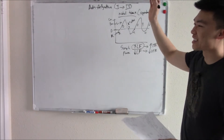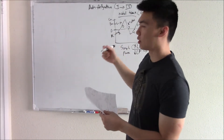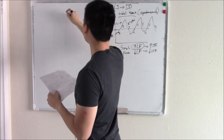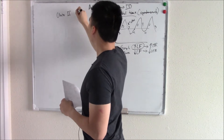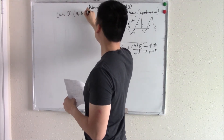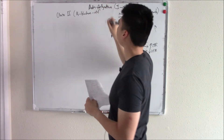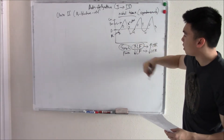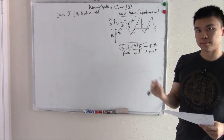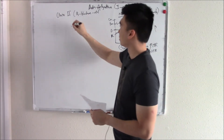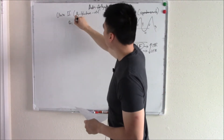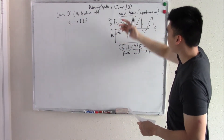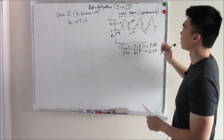So let's finally talk about antiarrhythmics. You have two classes that work on your nodal tissue. Class two — these are beta blockers. Your sympathetic system wants to increase your heart rate, and it does that by acting on beta-1 receptors of the heart, which increases your IF channels, increases the slope, and makes it depolarize quicker — increasing your heart rate.